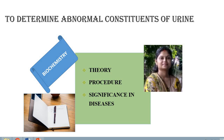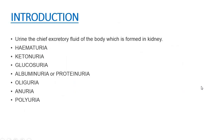Hello everyone. In our practical sessions related to biochemistry, today we are going to determine the abnormal constituents of urine. Urine is the chief excretory fluid of the body which is formed in the kidney. It is stored in the urinary bladder and eliminated through the urethra. The presence of certain abnormal constituents in the urine reflect certain disease states.